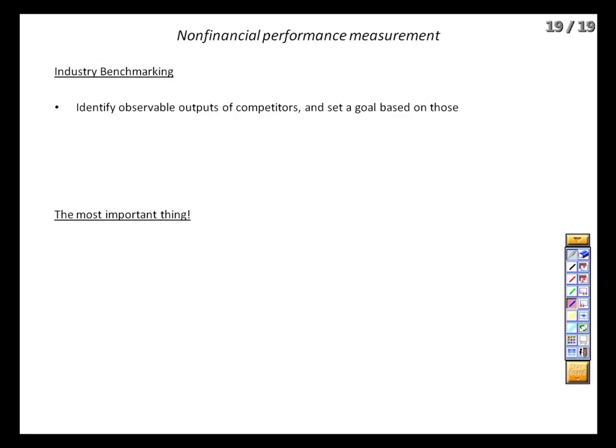There are other things we can do that are less revolutionary than the balanced scorecard, primarily industry benchmarking. The idea is that we find some observable measure for our competitors or our industry and see how we match up — and if we don't match up well, we set a goal and try to achieve it. For instance, back in the 90s, Continental Airlines used to pay every employee from the baggage handler to the CEO $50 each month that they were the number one on-time arrival airline, as rated by the FAA.